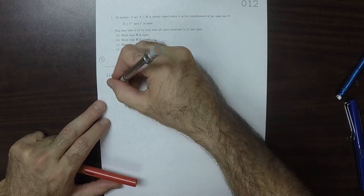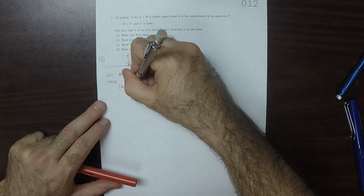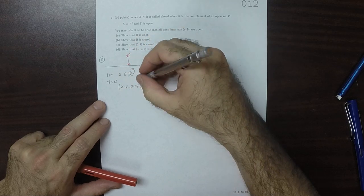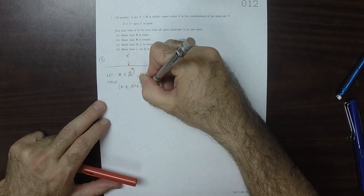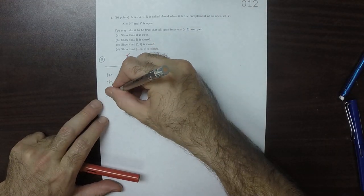Then, x minus epsilon to x plus epsilon is a subset of the reals. Therefore, the reals are open.